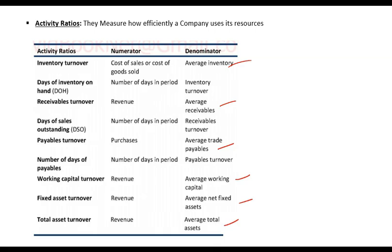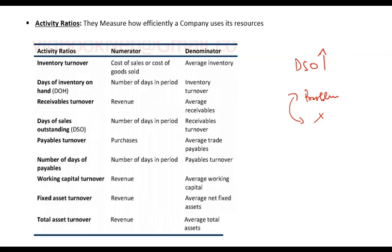If you take the average, it will normalize the overall number. A rising days sales outstanding is generally a sign of a problem — it is not good. However, it can happen because the company has overall grown. When a company grows, customers may be given a longer credit period to attract more sales, but those customers may not always have the ability to make those payments. So while a rising days sales outstanding can be a problem, it is not always a problem — you need to find out the reason for the change.